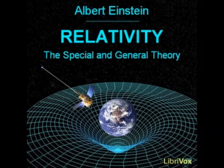If we confine the application of the theory to the case where the gravitational fields can be regarded as being weak, and in which all masses move with respect to the coordinate system with velocities which are small compared with the velocity of light, we then obtain as a first approximation the Newtonian theory. Thus the latter theory is obtained here without any particular assumption, whereas Newton had to introduce the hypothesis that the force of attraction between mutually attracting material points is inversely proportional to the square of the distance between them.